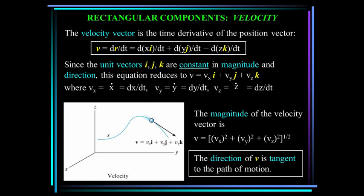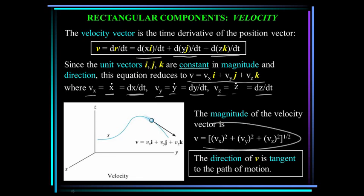The velocity vector is the time derivative of the position vector. The position vector is xi plus yj plus zk, so we take the derivative with respect to time. Since the unit vectors i, j, and k are constant in magnitude and direction, the velocity reduces to v_x i plus v_y j plus v_z k. We denote v_x as x-dot, which equals dx/dt. The magnitude of the velocity is the square root of the sum of the squares, and the direction of v is tangent to the path of motion.